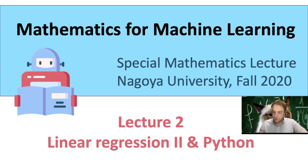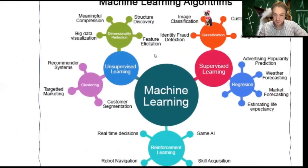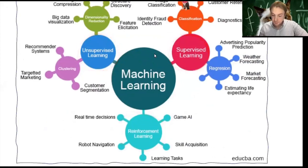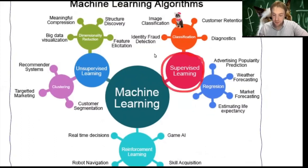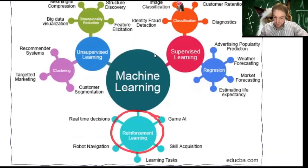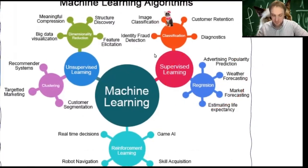Recall that last time I gave an overview of the field of machine learning and the different subfields. There were three main subfields: supervised learning, unsupervised learning, and reinforcement learning. Later we'll also do reinforcement learning — maybe some game AI where you teach a program to play games — but first we need to do the basics here.